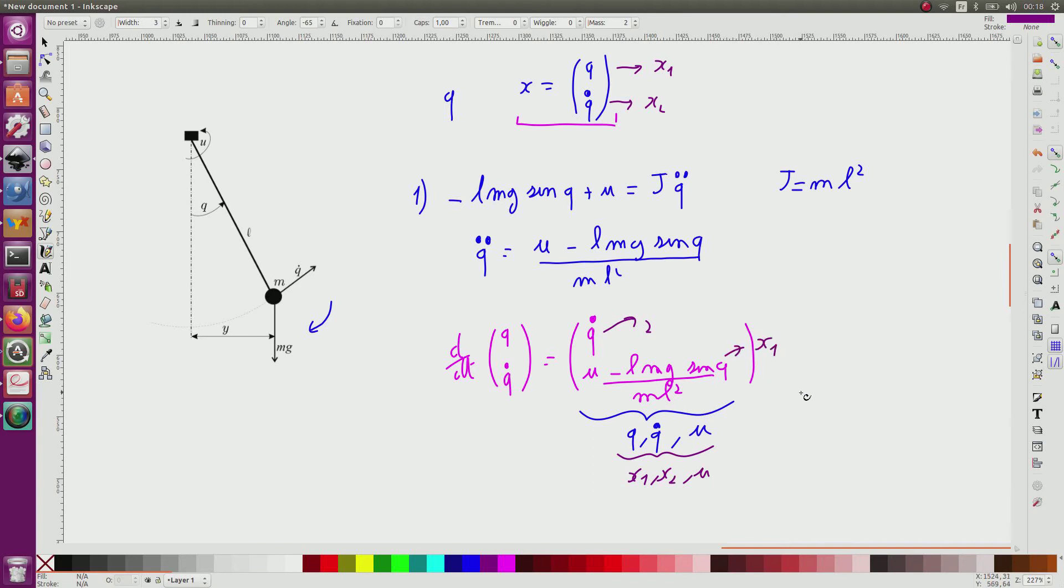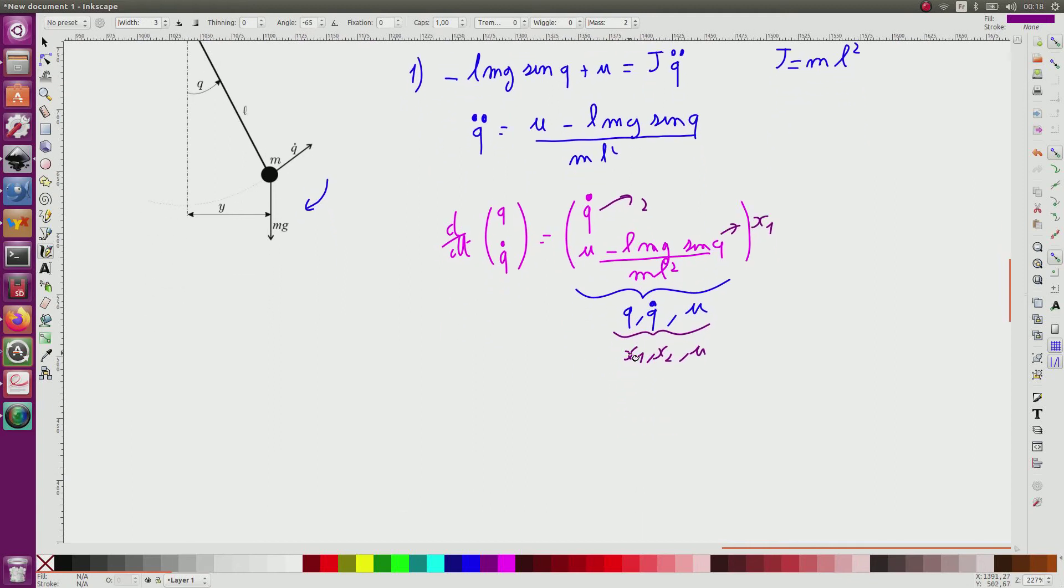And as a consequence, I will have the state equation, X dot 1 equal to X2, and X dot 2 equal to U minus LMg sin Q.